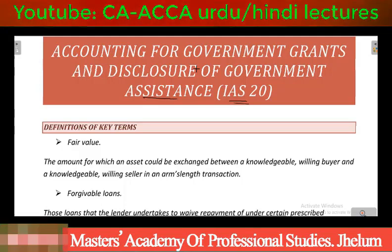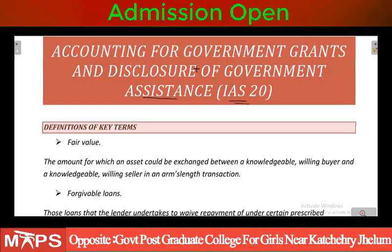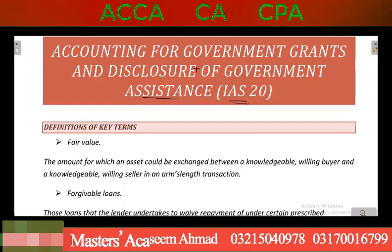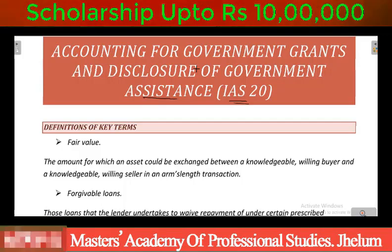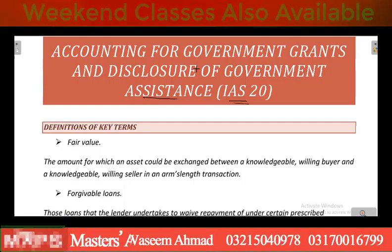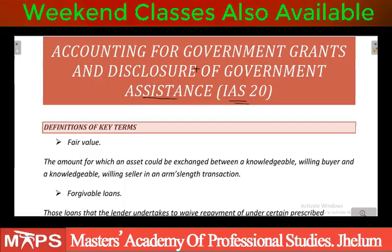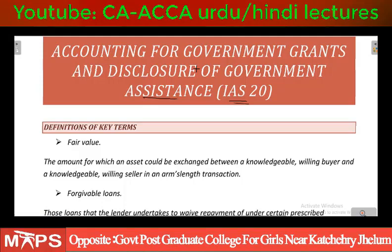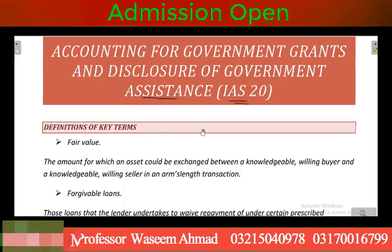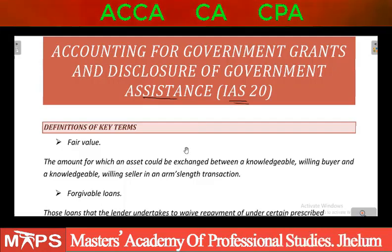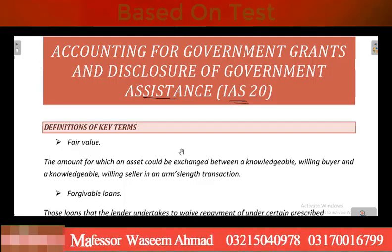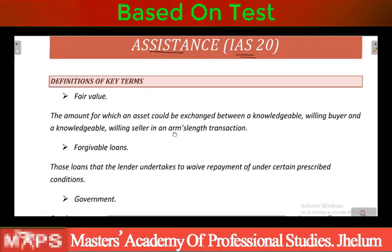Government jo hai wou yeh chahti hai ki loogun ka skill level improve ho, to government jo hai wou help kerti hai different entities ki. Wou apani businesses mein trainees ko rakhye aur us trainees ki cost ko bear karne ke liye government unki help kerti hai. Toh humne yeh dekhna hai ke agar government grant dhe rhe hai toh us ko kishe treat kiya jayega, aur government assistance aur government grants mein kya fark hai.